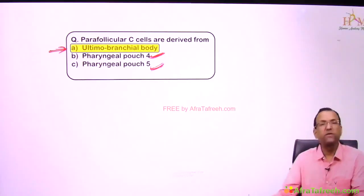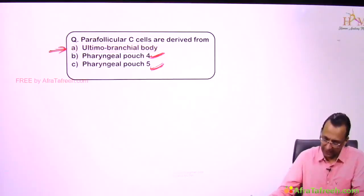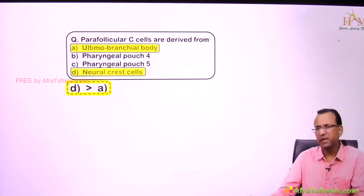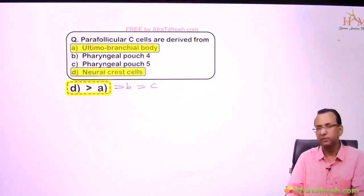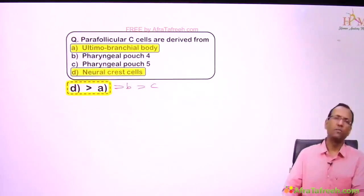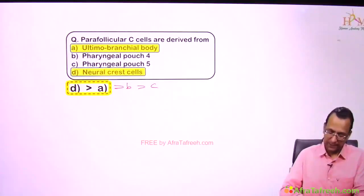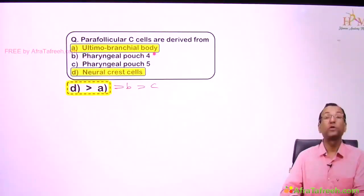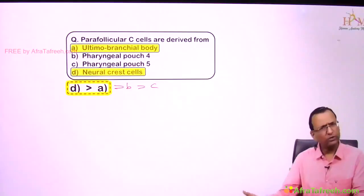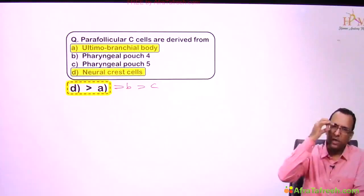All four of these are answers because all are involved in the formation of parafollicular C cells. D (neural crest) is a better answer than A (ultimobranchial body), A is better than B (4th pouch), and B is better than C (5th pouch). We do have a 5th pouch, but it is rudimentary.